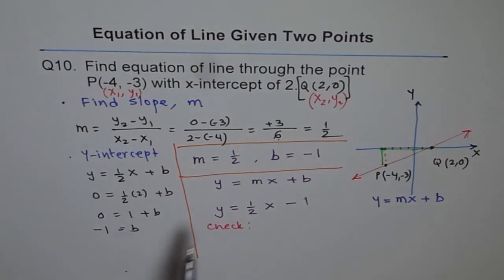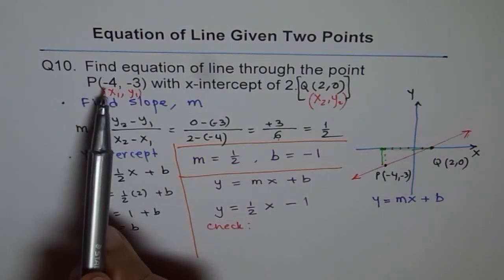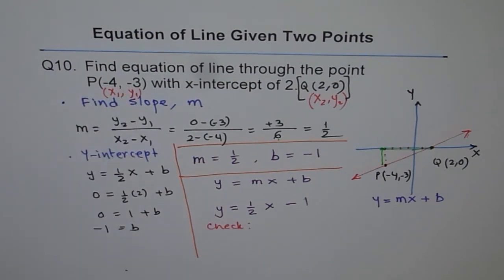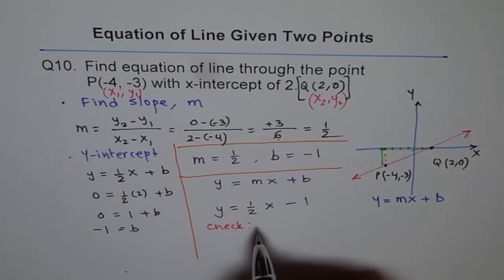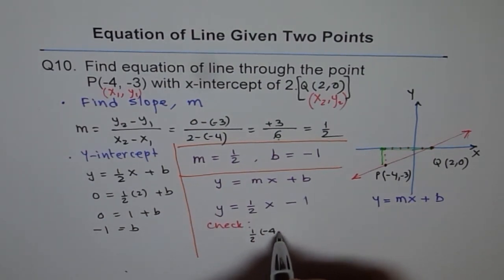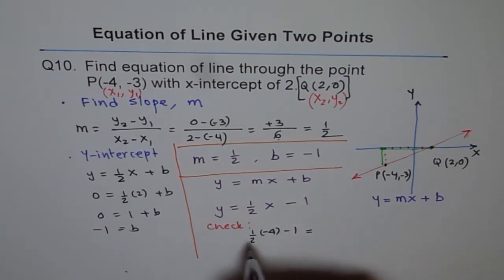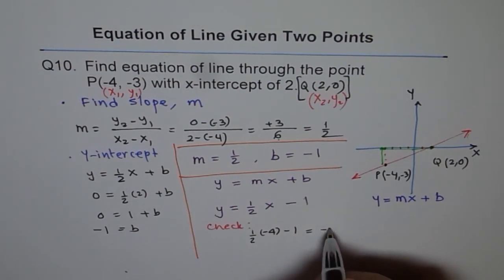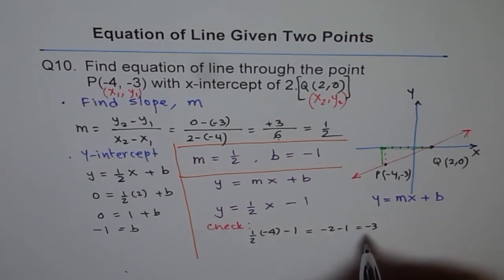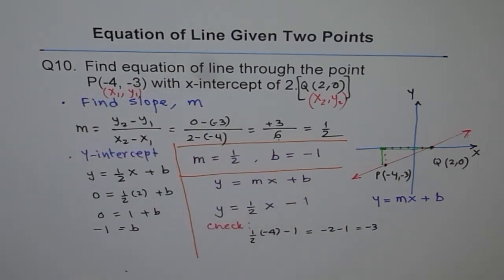Now let's check it for P, which is (-4) for x and (-3) for y. So if I put (-4) here, then what do I get? So let's check this out. If I put (-4) here, then I get half times (-4) minus 1. This is equal to, when you divide (-4) by half, you get (-2) minus 1. That gives you (-3). (-3) by y value, perfect. So it is a good check. So once you write down the equation, you can check also. Thank you.